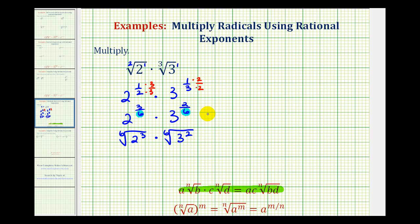And now because we have the same index, we can multiply. Index is going to stay the same, and we'll have two to the third times three to the second. Now we can tell we're not going to have six equal factors, so this will not simplify. So now we'll just find this product.